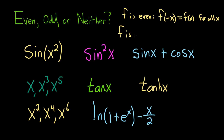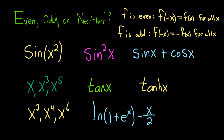Odd functions — so f is odd — basically, if you plug in minus x into the function, you get minus the actual function, so minus f of x. And this is for all x. It's like the minus 1 factors out. Odd functions are symmetric about the origin.